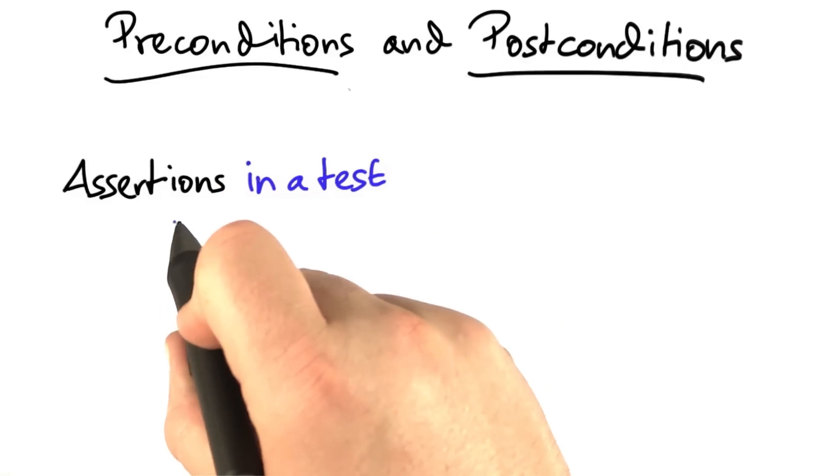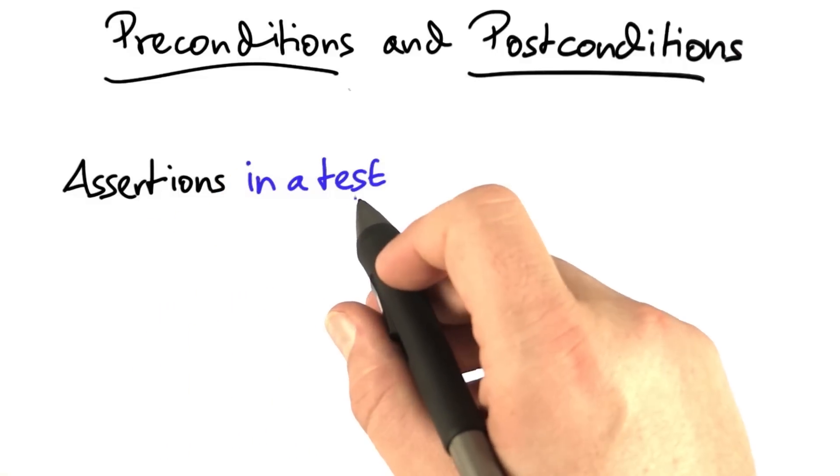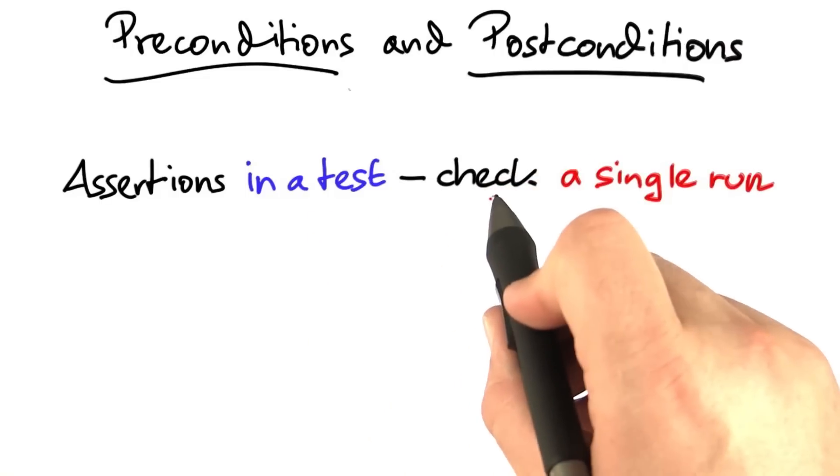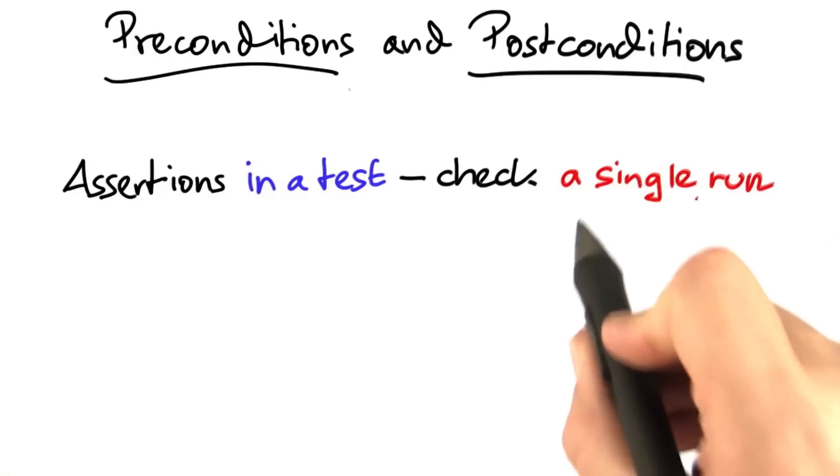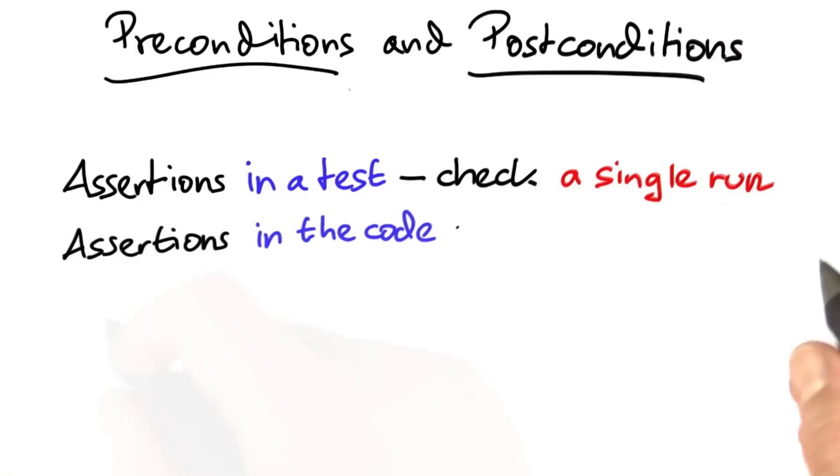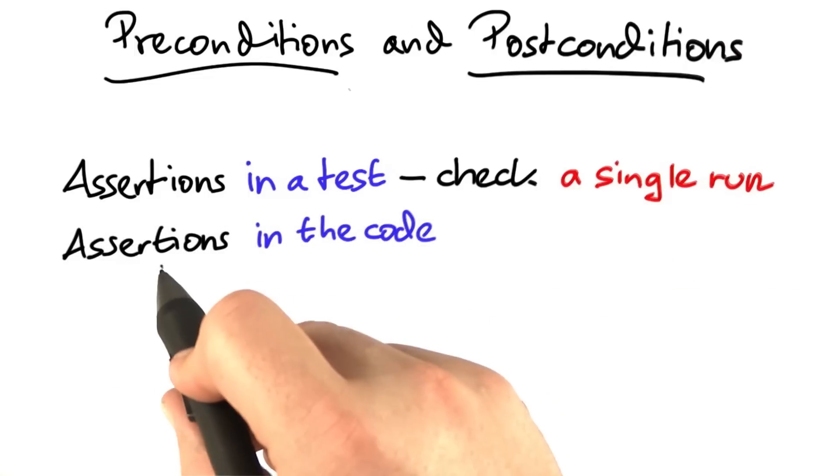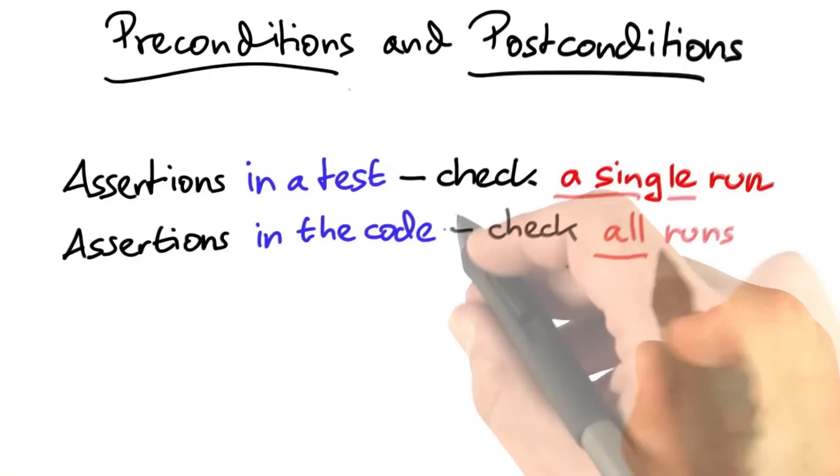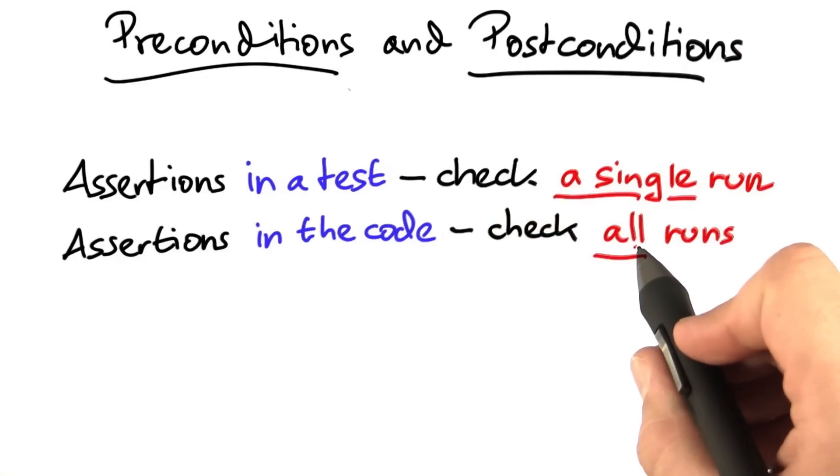So far, you may have encountered assertions in tests, in particular in unit tests. Here assertions are being used to check the results of a single run, namely the test run. What we're going to look into is assertions that are integrated into the program code itself, where they check all runs at once.